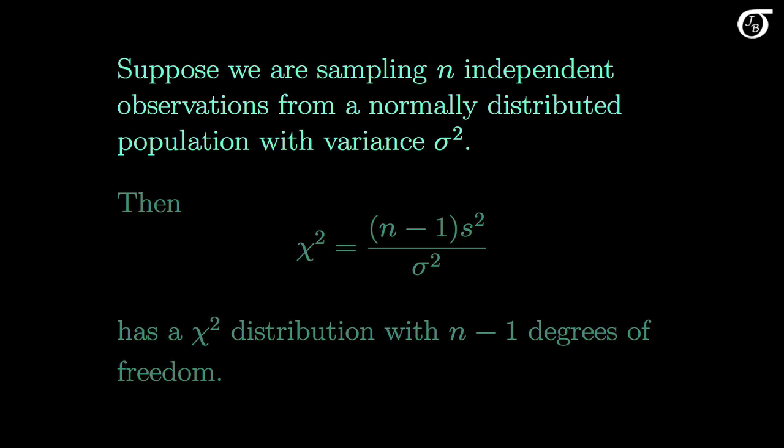Suppose we are sampling n independent observations from a normally distributed population that has a variance of sigma squared. Then the quantity n-1 times s squared over sigma squared has the chi-square distribution with n-1 degrees of freedom. When sampling from most other distributions, the sampling distribution of the sample variance does not work out quite so cleanly mathematically, but for the normal distribution it does.